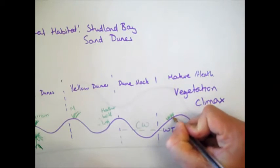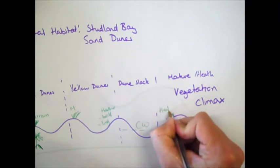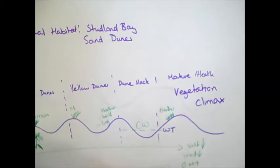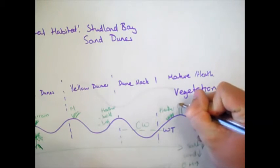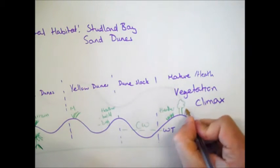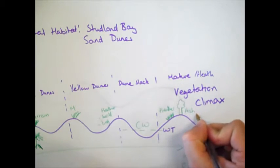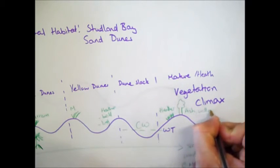We've got a large amount of heather, but we also start to see, because salt content is down, wind is down, and organic matter is really much higher, we start to see small trees starting to thrive in this area. Things such as ash or willow trees are able to grow here.